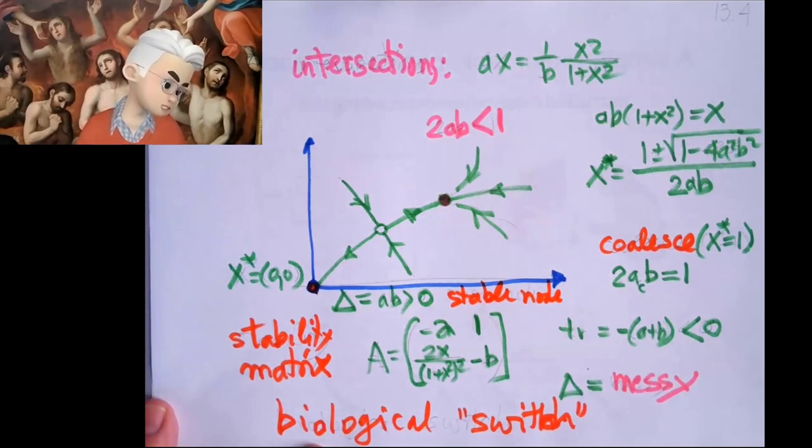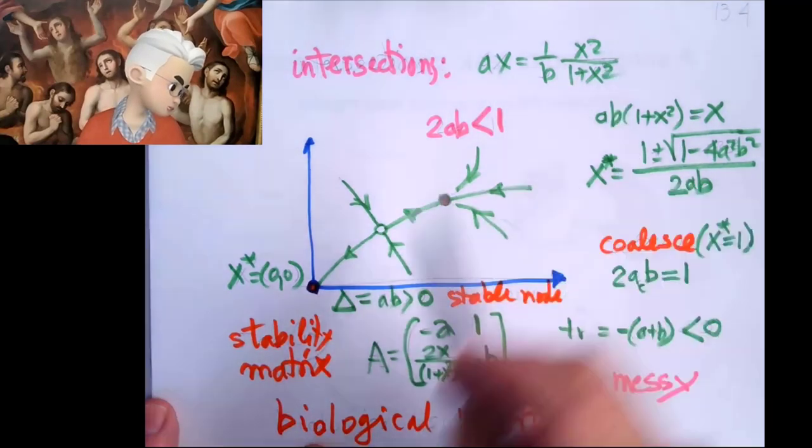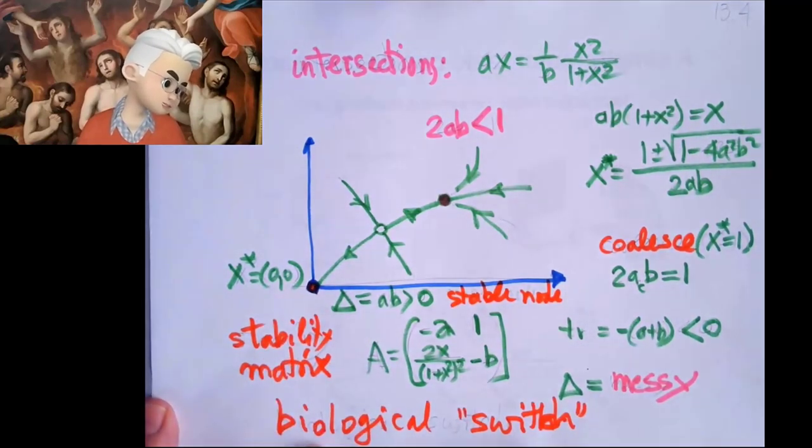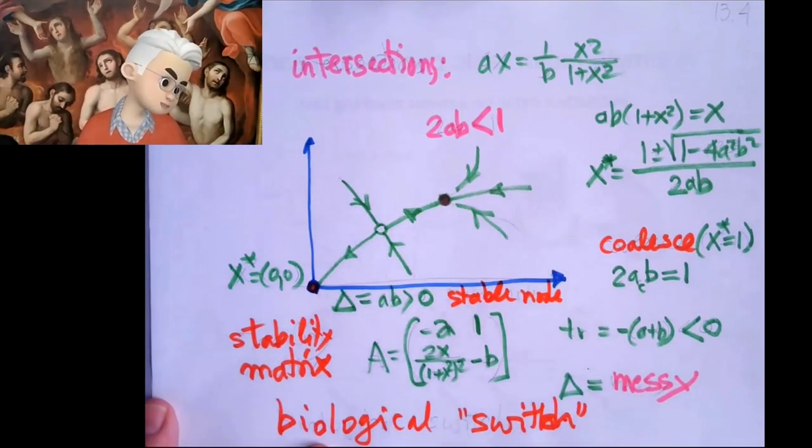And you find that one fixed point is always there. That's when x is zero. And there are two more fixed points. Then you do the usual thing.